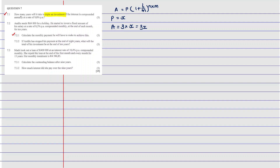What are we looking for? They say how many years, so we're looking for N. We know that i equals 9.8 divided by 100, which equals 0.098. N is the one we're looking for. Since it's compounded annually, M equals 1.